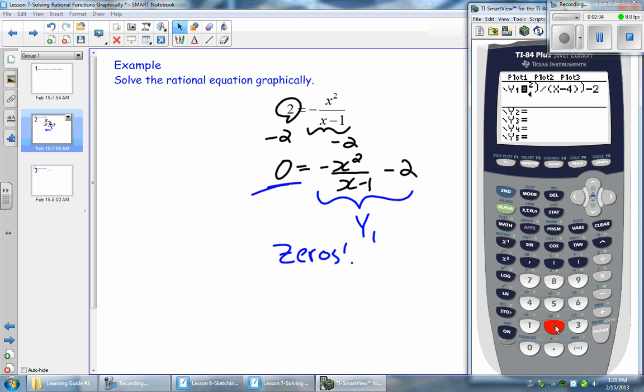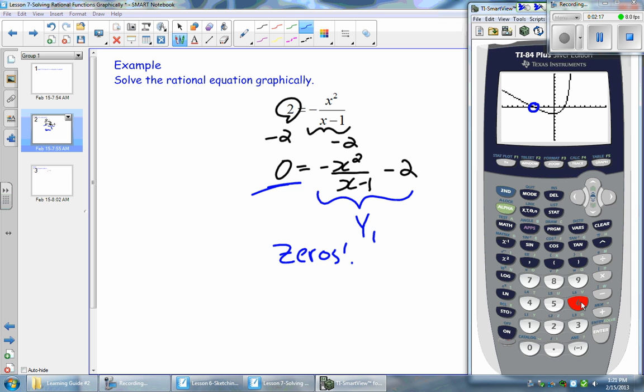So we're going to use a regular Zoom 6 standard. And we're going to take a look at the graph here. So how many points of intersections do you see? Well, we have 2. So that means we actually have 2 solutions for x.